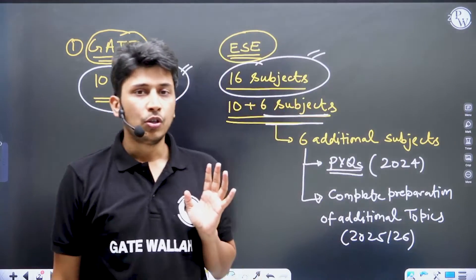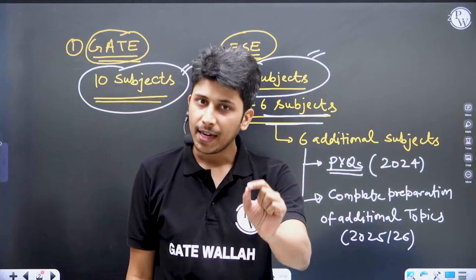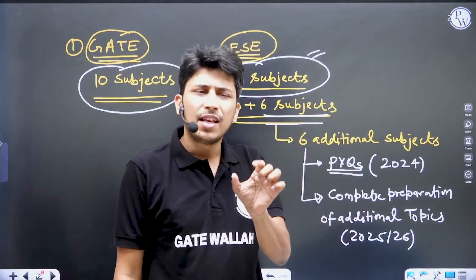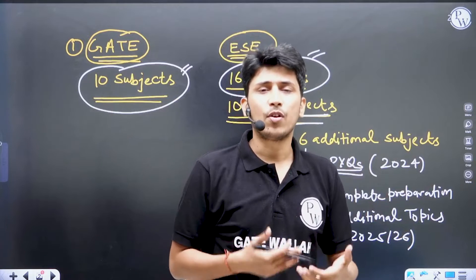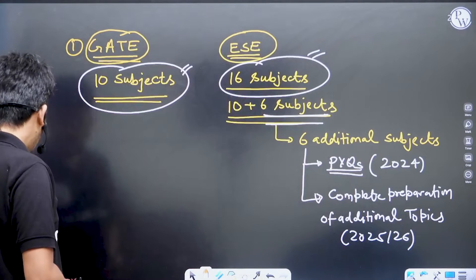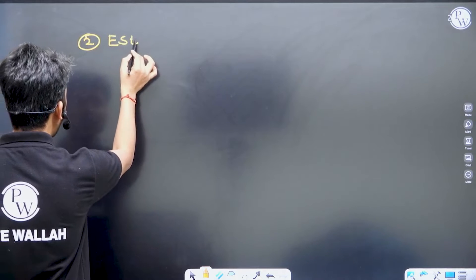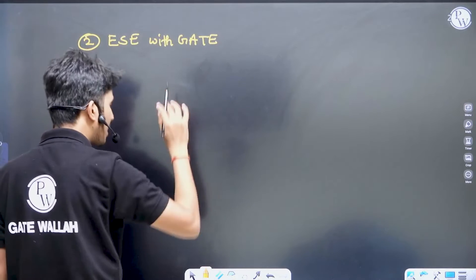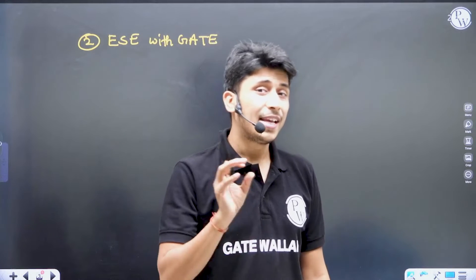In short, if you are preparing for GATE you cover fewer subjects but in depth. To add ESC preparation, you only need to add three to four, or maximum six, additional subjects and you are done with ESC preparation. The second thing to discuss is how to prepare for ESC alongside GATE without hampering your GATE preparation.